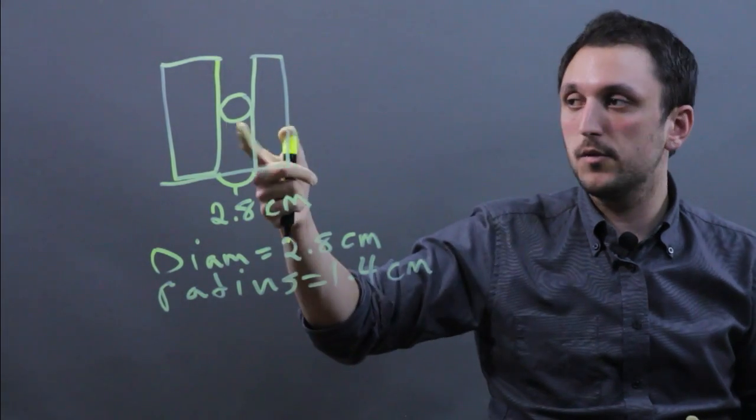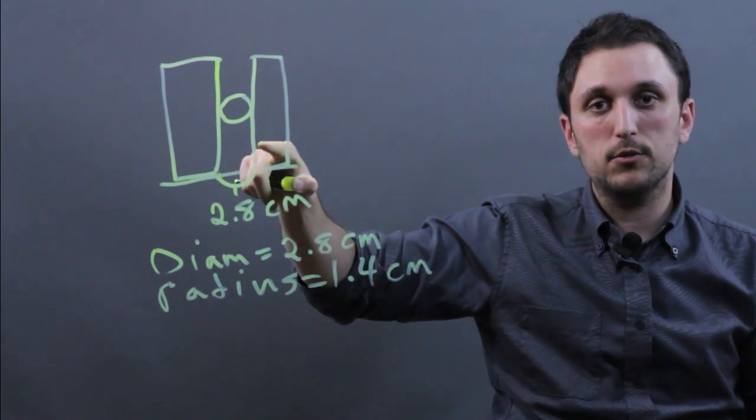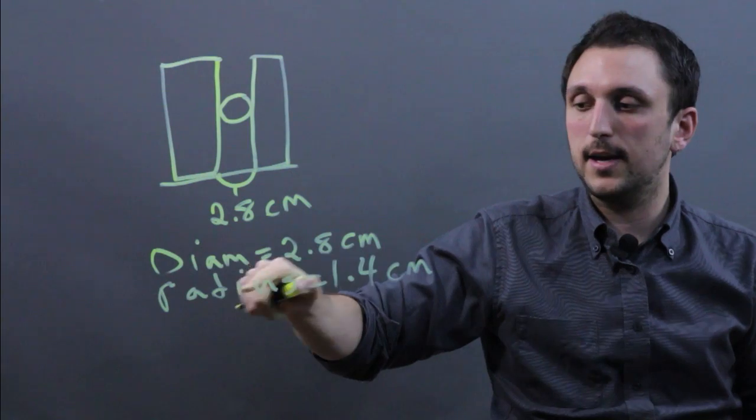So when you want to find the radius of a marble, wedge it between two flat objects, measure the distance between the two objects, and divide it by two.